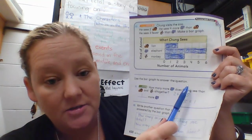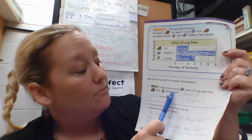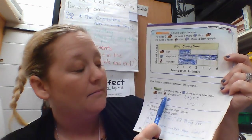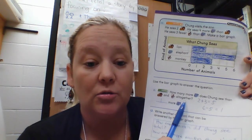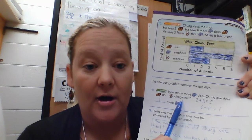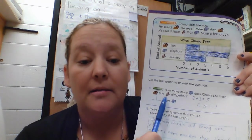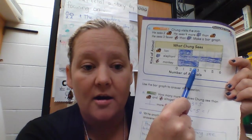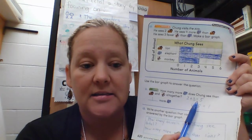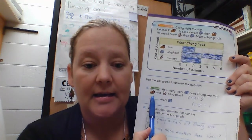It says use the bar graph to answer the question: how many more elephants does Chung see than lions and monkeys all together? Lions and monkeys all together means I'm going to look at the bar graph, see how many lions and how many monkeys, and add them together. The lions are two, the monkeys are three, so I do two plus three — two plus three is five. That was my first step: I added lions and monkeys.